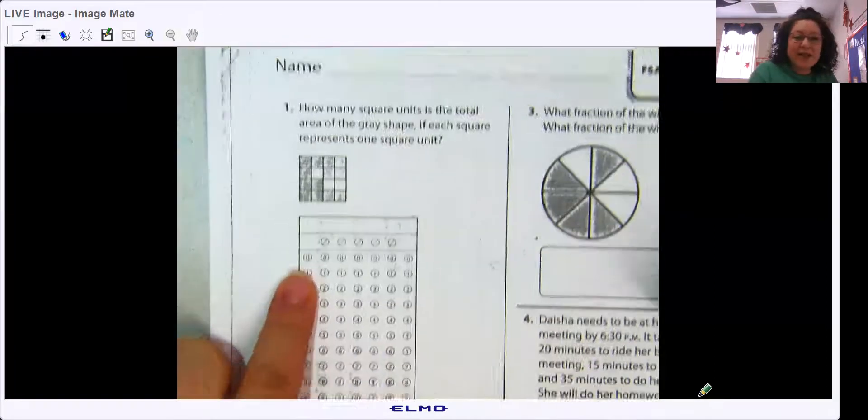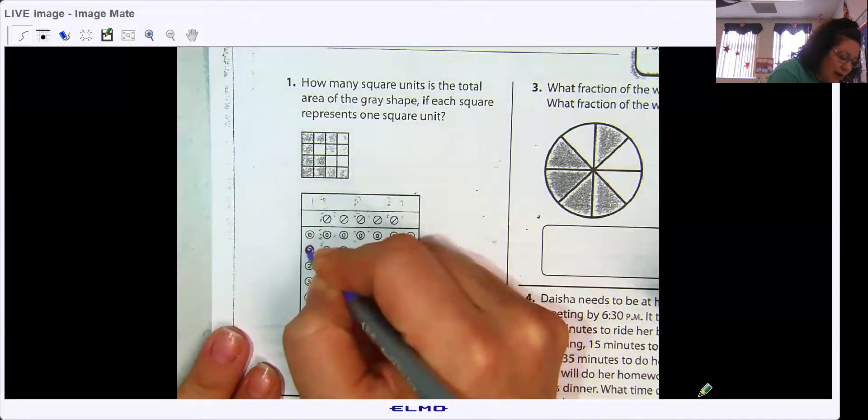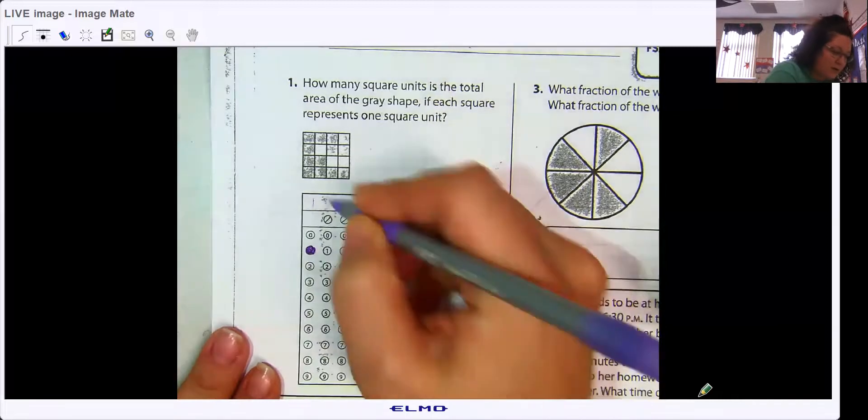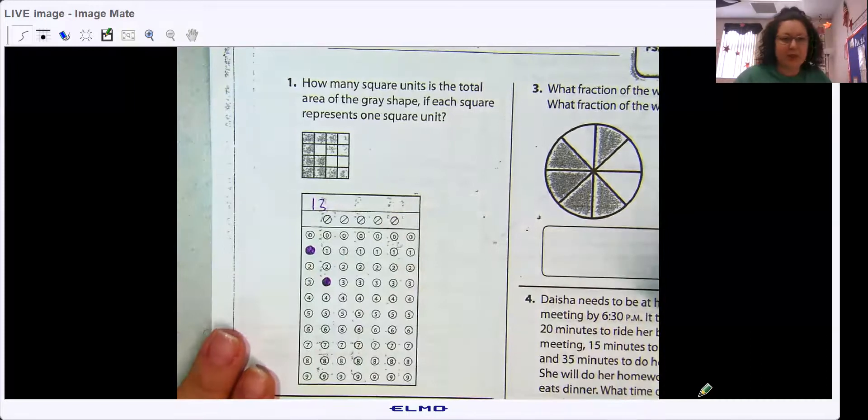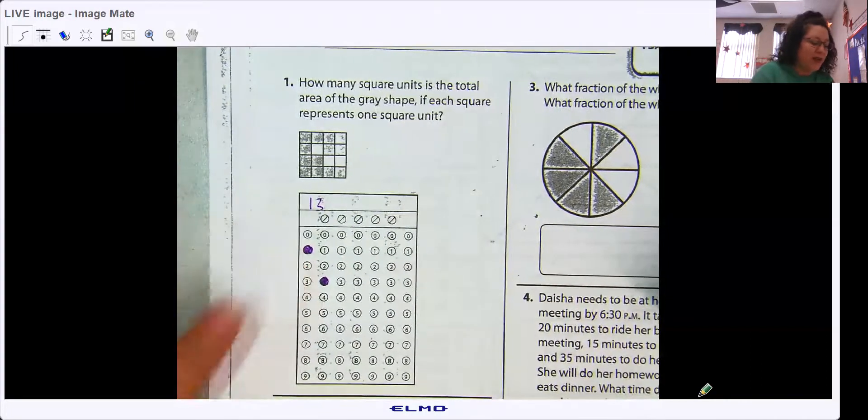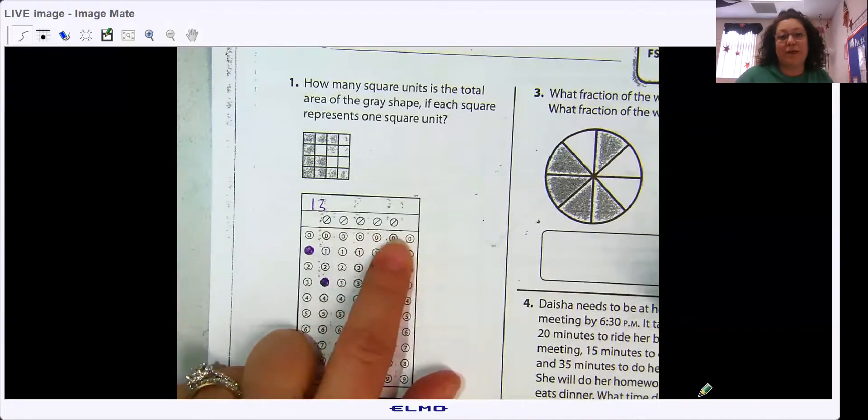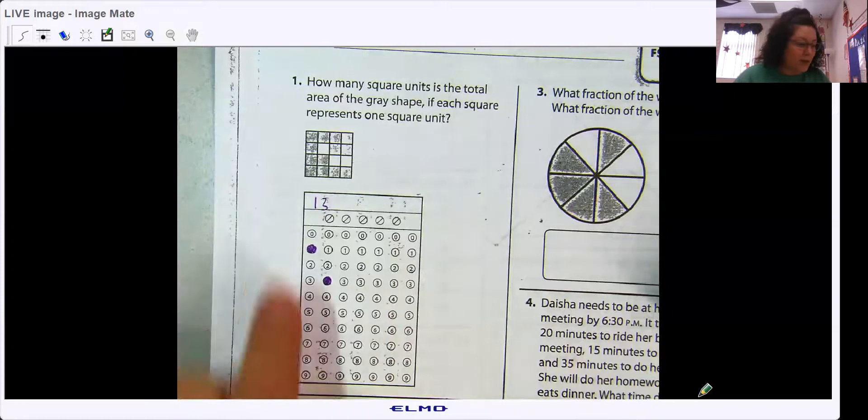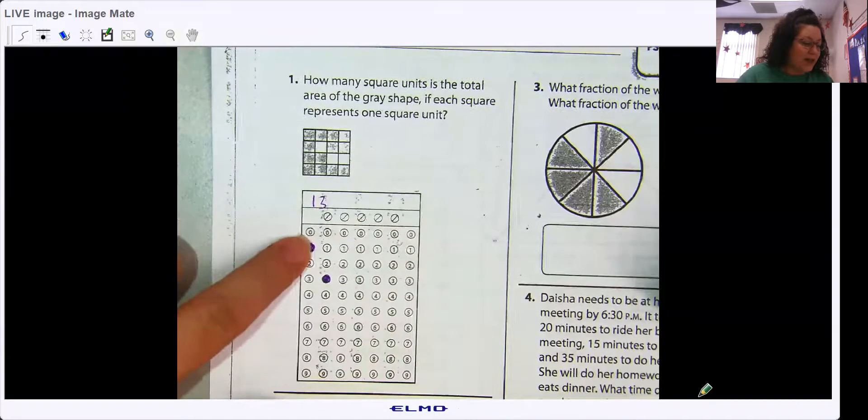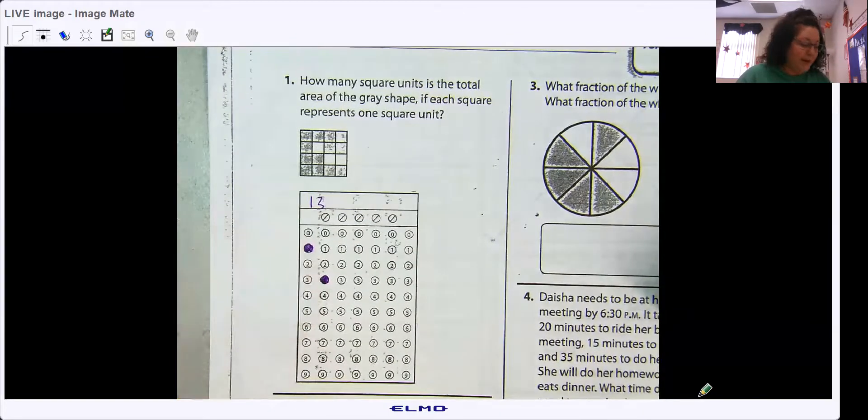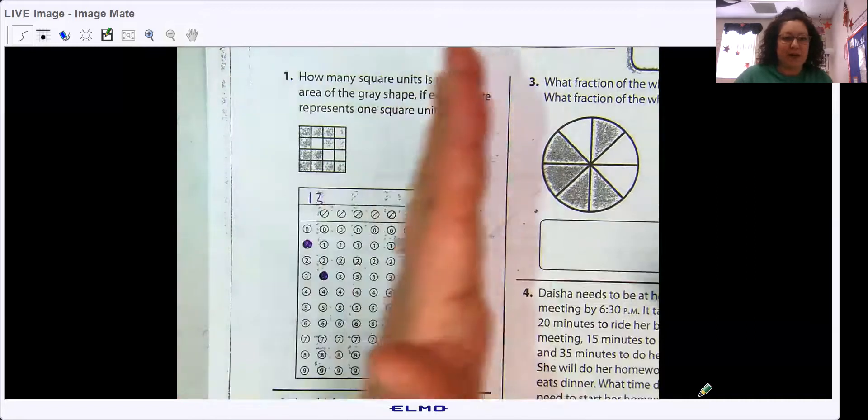So this is how we bubble this in - 13 is one, and then three. Okay. So you have to make sure you bubble in the right numbers. These symbols are for when there's a fraction, so we'll get to that in a little bit. Don't worry about this now. This is for fractions. Otherwise, 13, we would bubble in one, three, right? Just like when we read, we start from left and we go to the right.